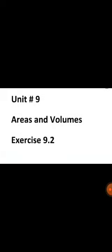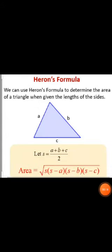Today we are going to do Unit 9, which is Area and Volume, and we have to do Exercise 9.2. In this exercise we are going to study about Heron's formula. Heron's formula is basically used to find out the area of a triangle when we are given different sides of a triangle.